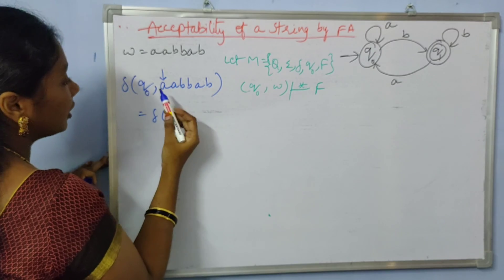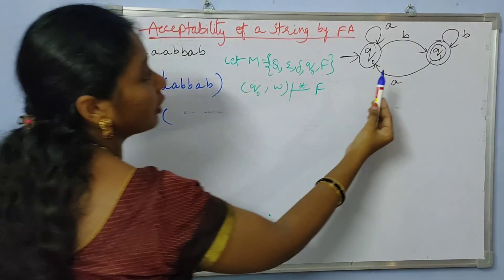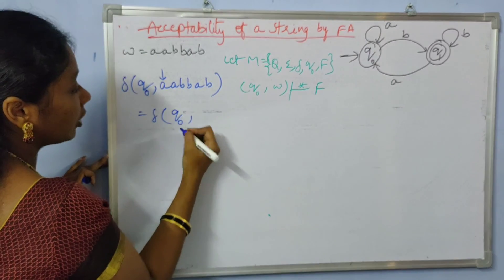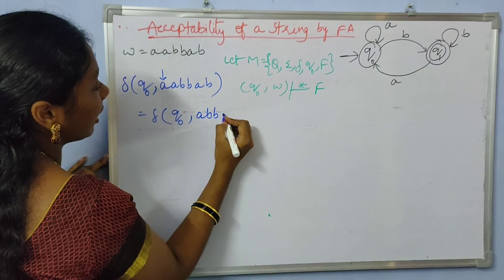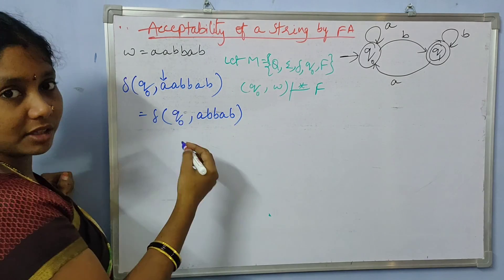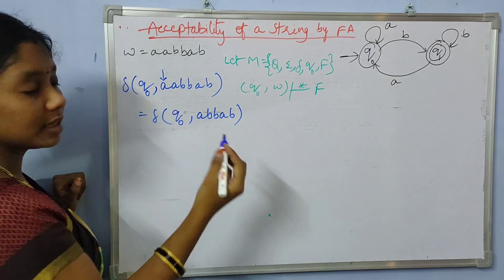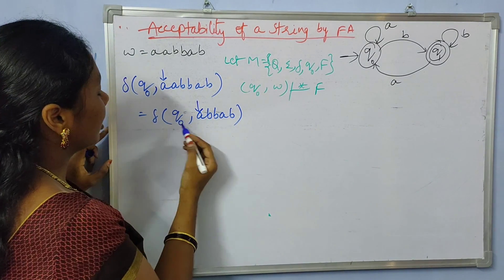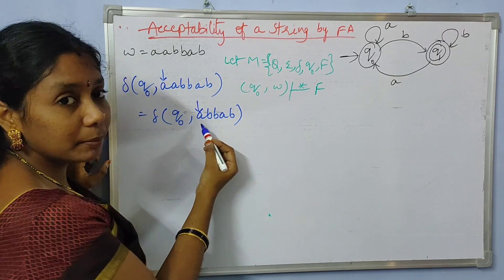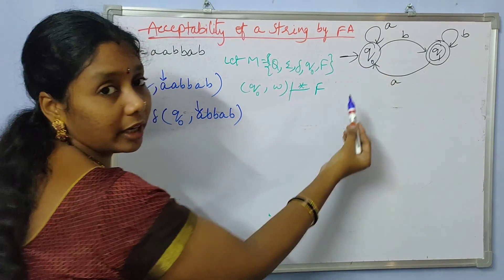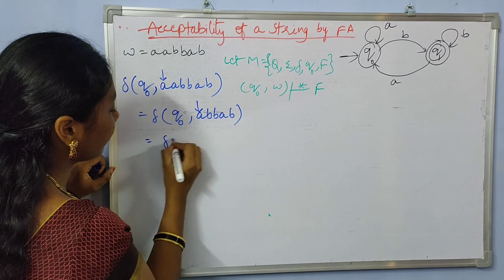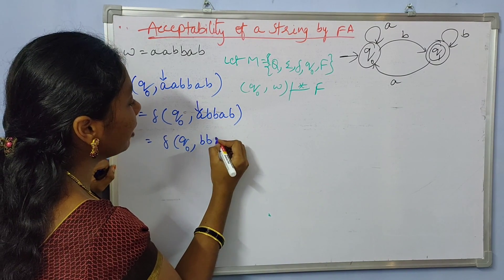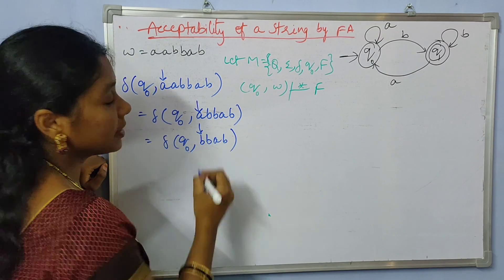From q0 with input 'a', we go to q0 again. We are at q0 again, and we need to process the next symbol. The next input symbol on the tape is 'a'. Transition from q0 with input 'a' goes to q0 again. Now the remaining symbols are b b a b, and the next input symbol to be processed is 'b'.